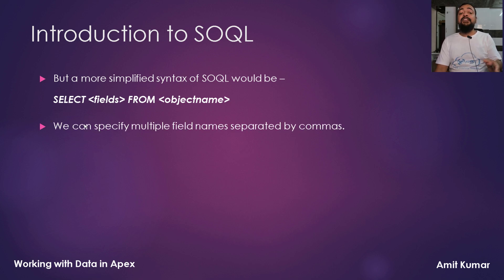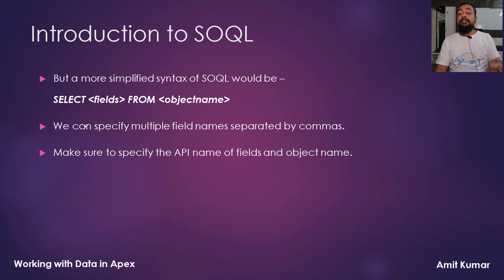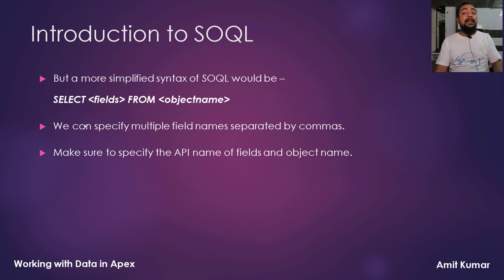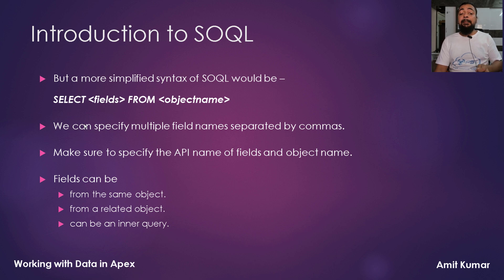We can specify multiple field names separated by commas, but while specifying the name of the fields and the object name, make sure you specify the API name of these fields and not the label. The same goes for the object — we will specify the API name of the object and not the label. Fields can be from the same object, from a related object, or can be an inner query itself. In this video we will see a very simple SOQL query.